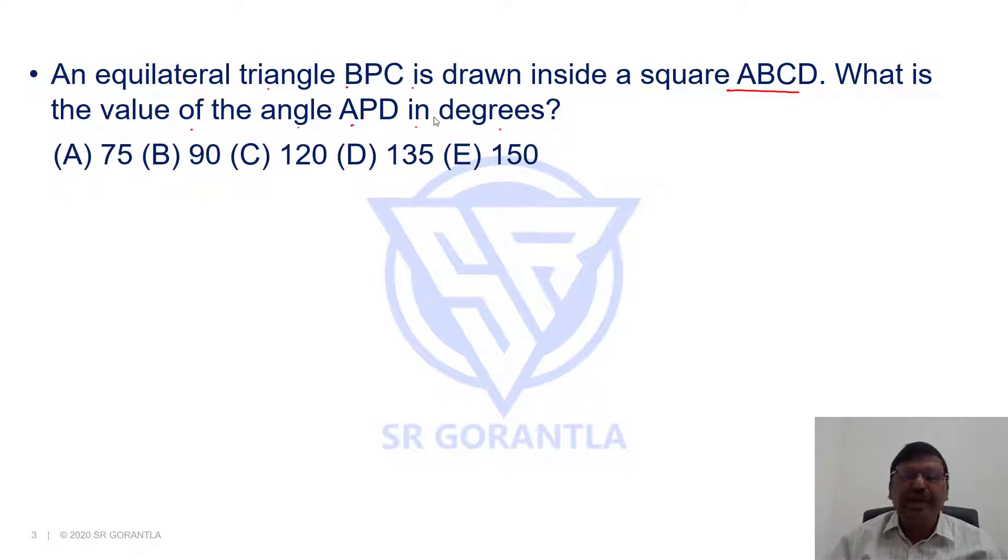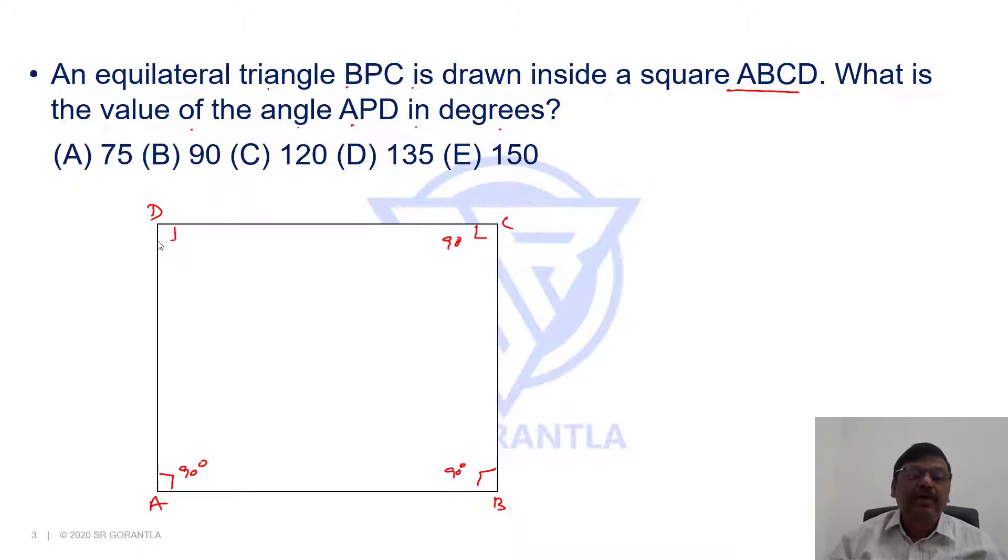Let's draw the diagram. So we have, let's say, A, B, C, D is a square. Because it's a square, all angles are 90 degrees. And it's a square, all sides are equal. So we can say AB equals BC equals CD equals DA.